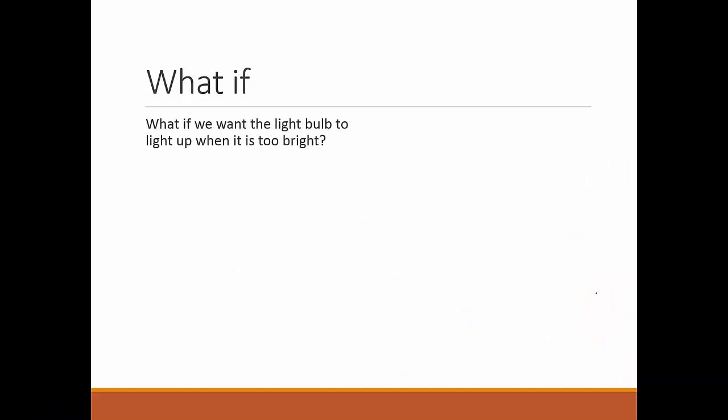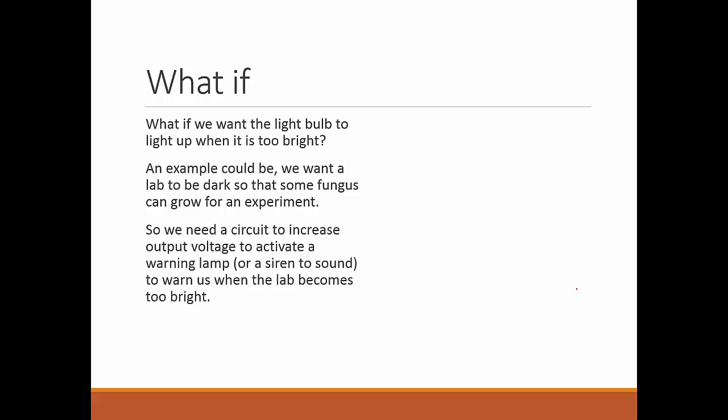But what if we want the light bulb to light up when it's too bright? You may think that this is quite silly, but there are of course possible cases. For example, we want one lab to be dark so that some fungus can grow for experiment. And we need a circuit to increase the output voltage to activate a warning alarm, a lamp, or a siren to warn us when the lab becomes too bright.